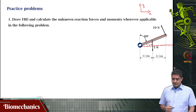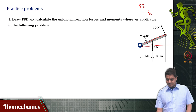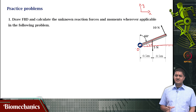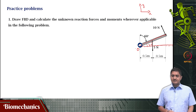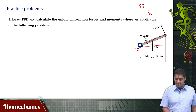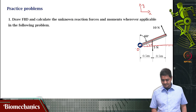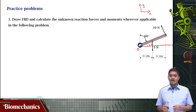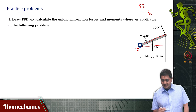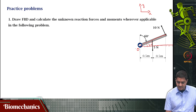This bar can rotate about point O. This is not explicitly given in the problem, but from the way the diagram is drawn, we presume that the bar can rotate about O. That means this bar will have only two degrees of freedom — it cannot translate in the x direction or the y direction. The corresponding reaction components will be present. Let us try to draw the free body diagram of this.